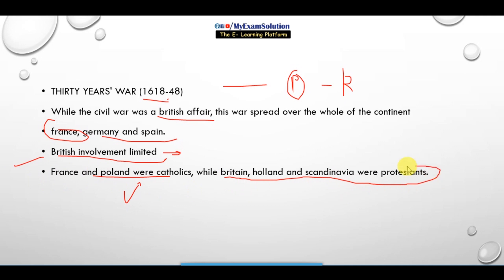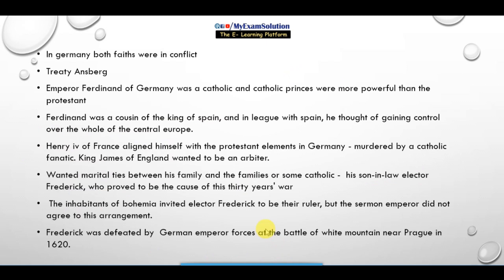France and Poland were Catholics, while Britain, Holland, and Scandinavia were Protestants. In Germany, both faiths were in conflict, but this conflict was sought to be kept in check by the Treaty of Augsburg. The Treaty of Augsburg was very important at that time to prevent war between many countries.